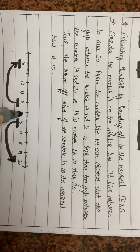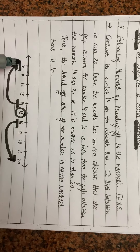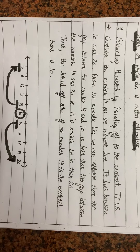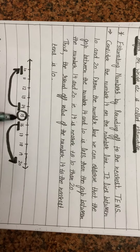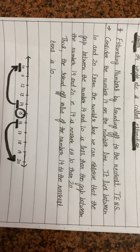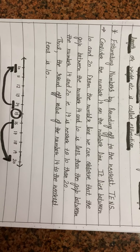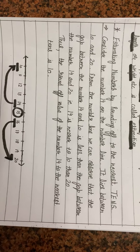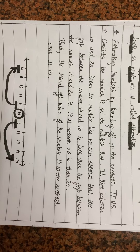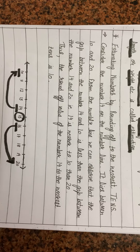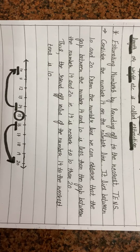Now let us consider the number 15. It also lies between 10 and 20. The gap between 10 and 15 is the same as the gap between 15 and 20. Since it lies in the center, we will always take the further value. So the approximated value of 15 is also 20.